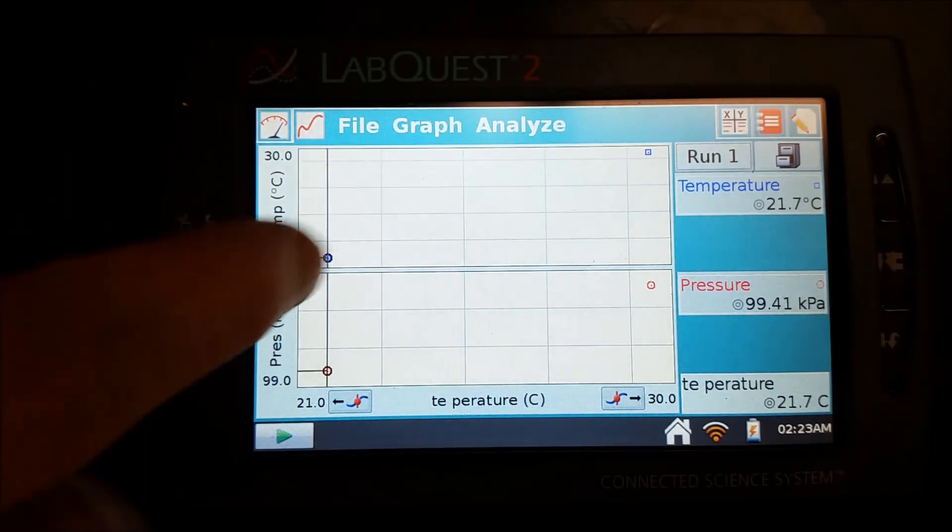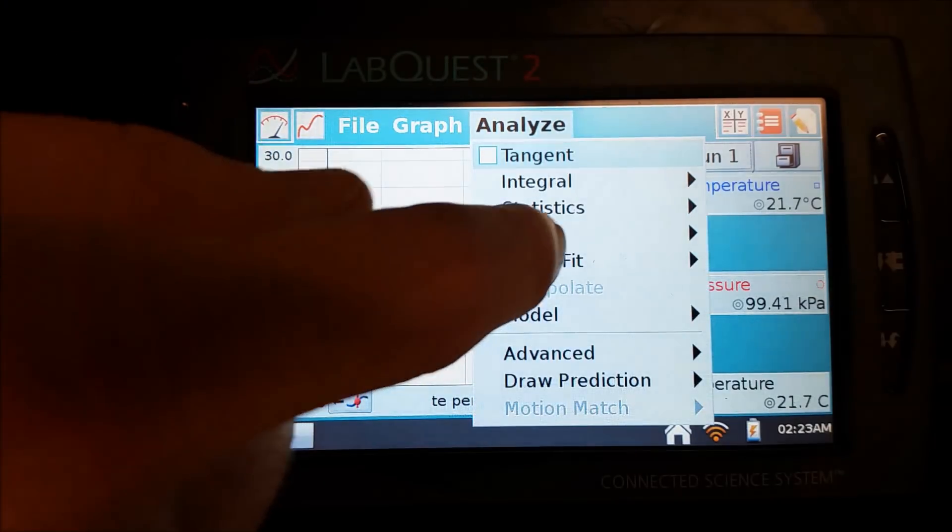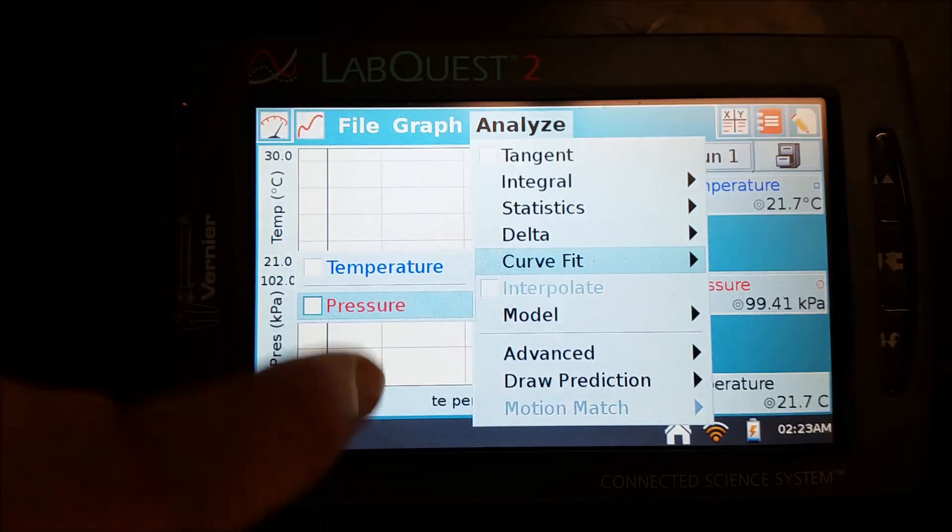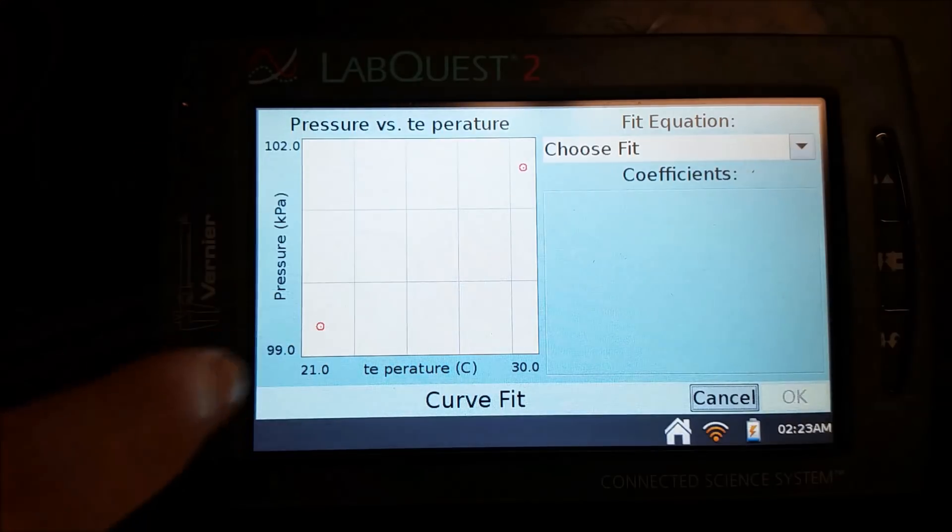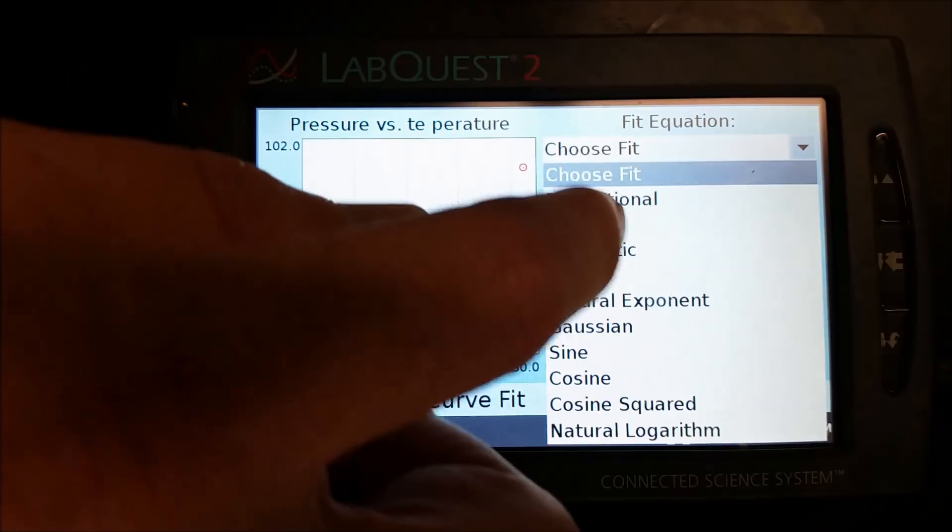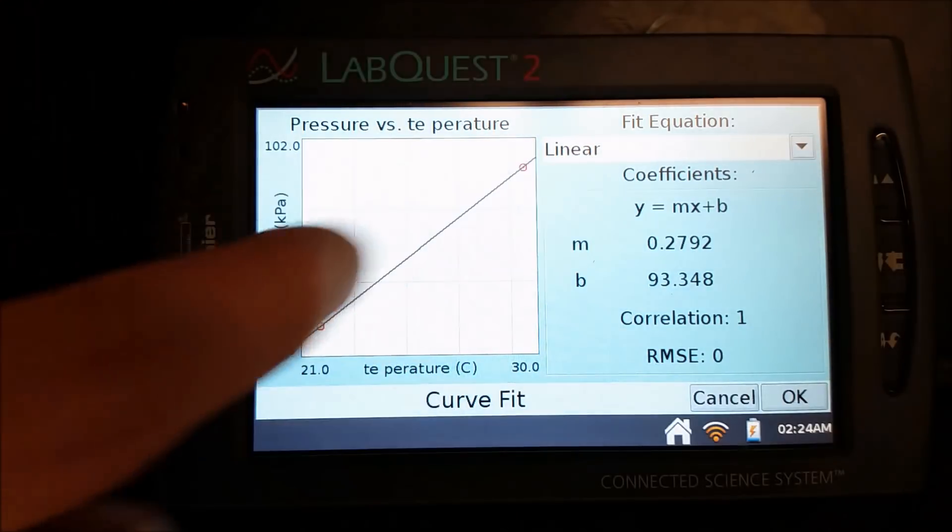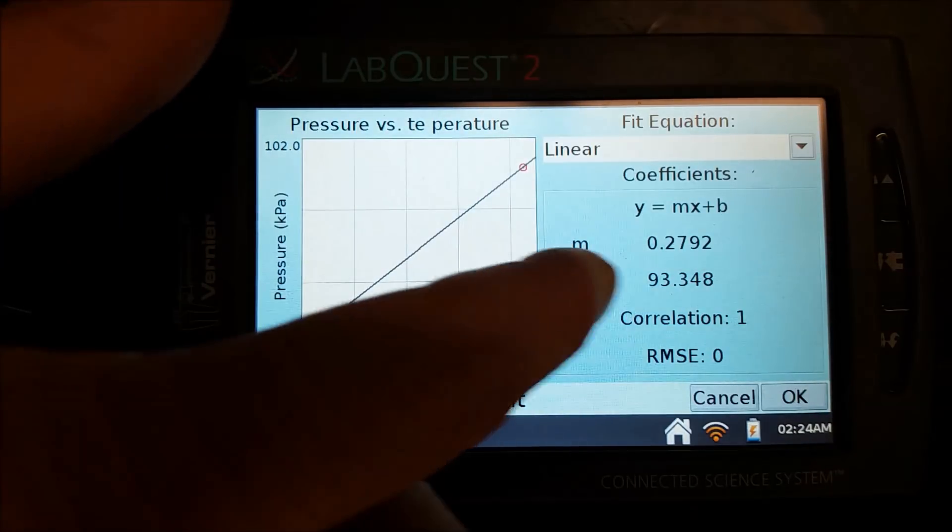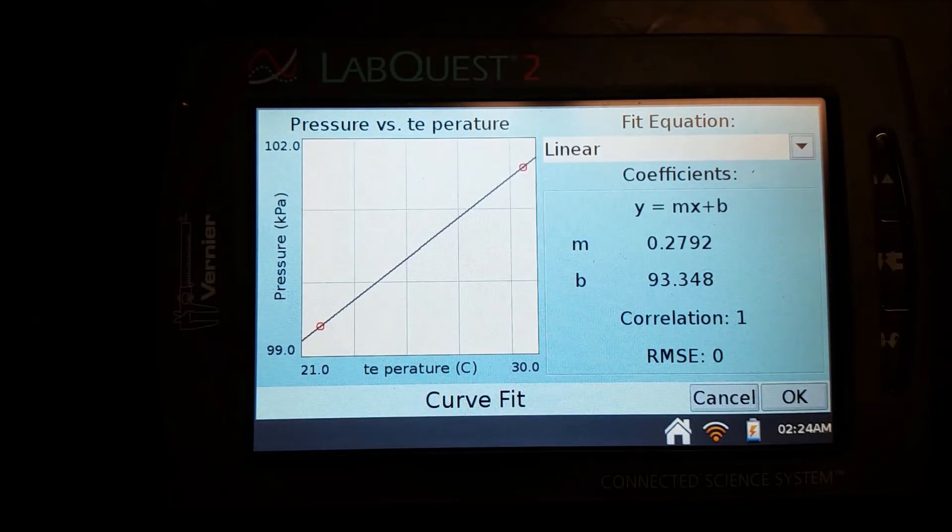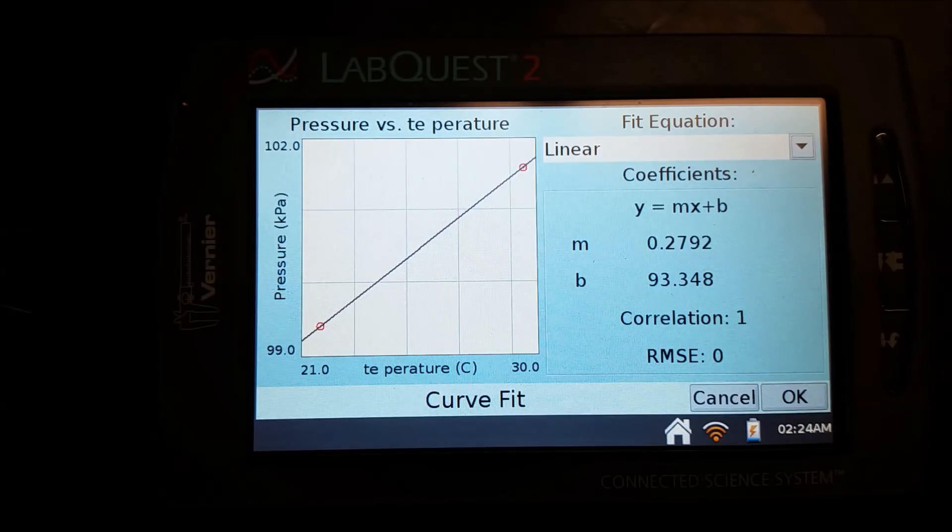And so now I have these two data points, and what I can do is I can create a function and a graph on here. So if I go to Analyze and then under Curve Fit and Pressure. So I now have pressure compared to temperature, and I have this set of two points. And you can choose on your fit what you want. So I want a linear y equals mx plus b. And so now I have y, which is pressure, is equal to the slope 0.2792 times x, which is temperature, plus this constant of 93.340. So I'm able to use this really quickly to come up with a representation of pressure versus temperature that I can then do some analysis of.